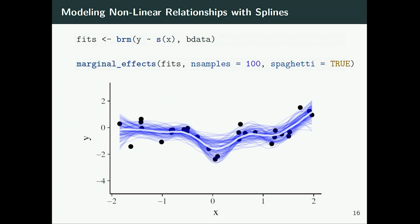The key point is that we can add multilevel structure, censoring, and different response distributions — for instance for reaction times, survival times, or count data — and everything still works the same way within the same package.